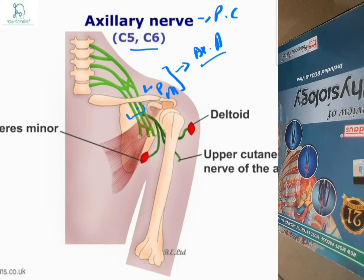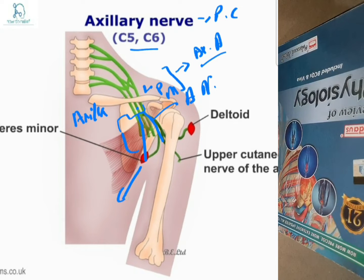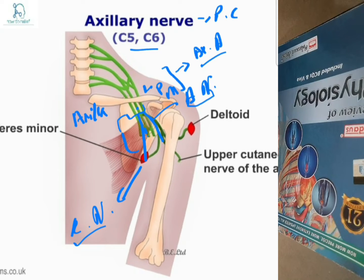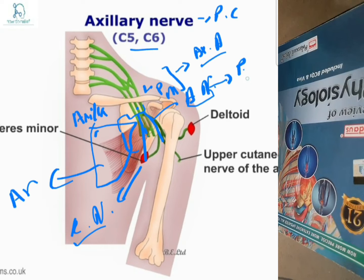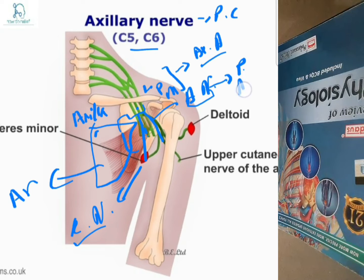When these three cords arise and reach the axilla region, they are split into branches. Our posterior cord divides into two branches: the axillary nerve and the radial nerve. In the axilla, the axillary nerve lies posteriorly to the axillary artery and anteriorly to the subscapularis muscle.